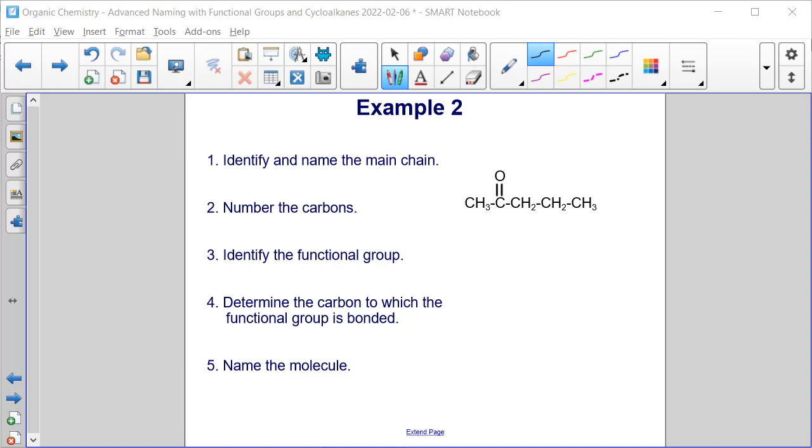All right, here's example two. Step one in the five steps of naming this structure is to identify and name the main chain. So you can see a C double bond to an oxygen there in the right here. And so here's our main chain. And it is one, two, three, four, five carbons long. So a five carbon chain we will call pentane.